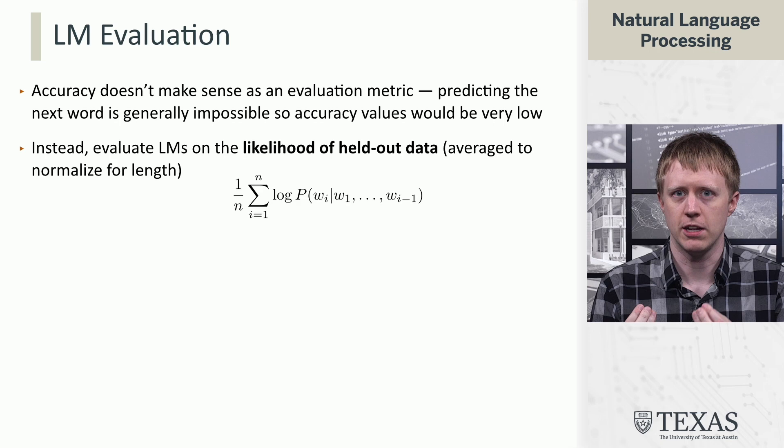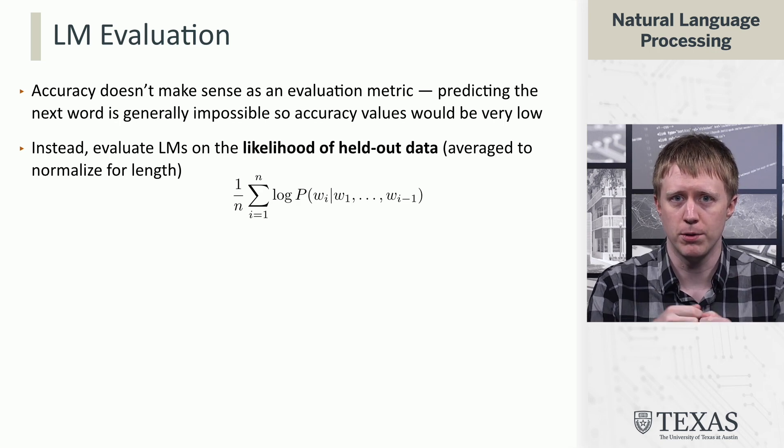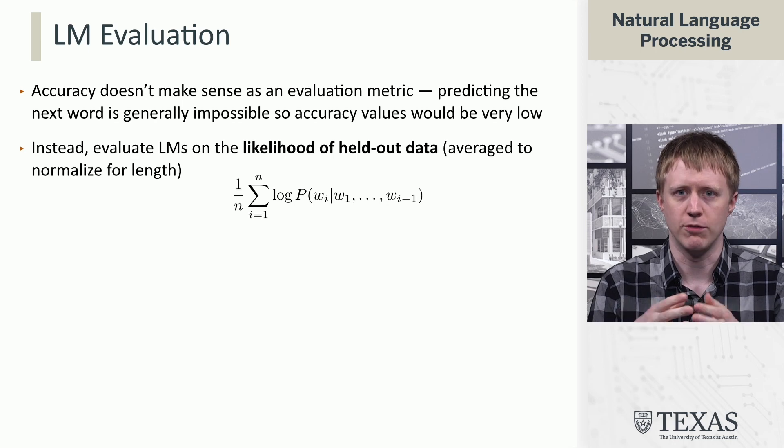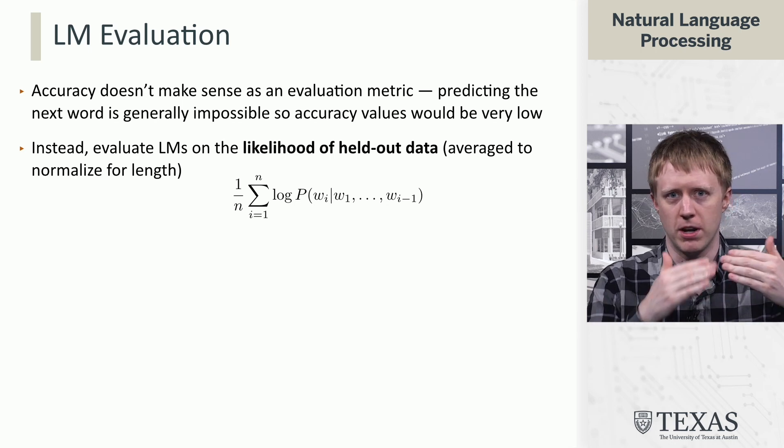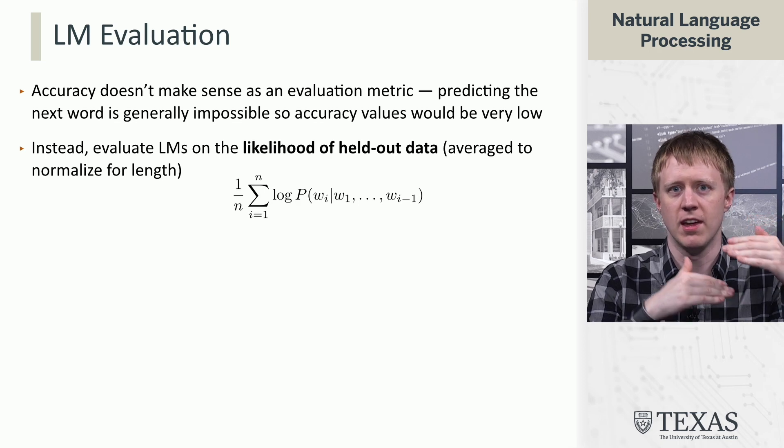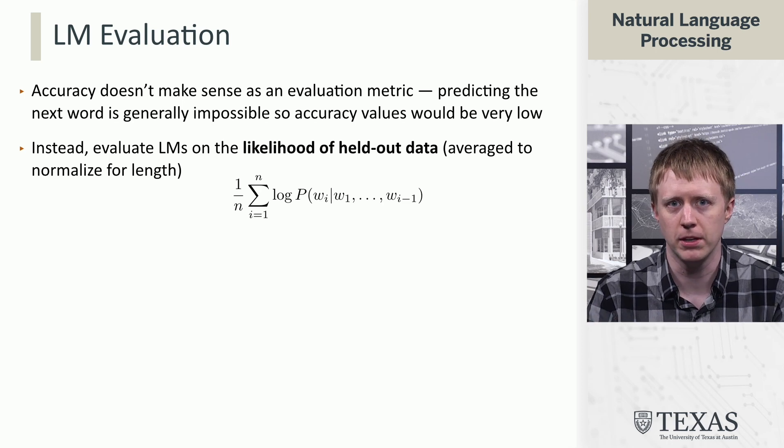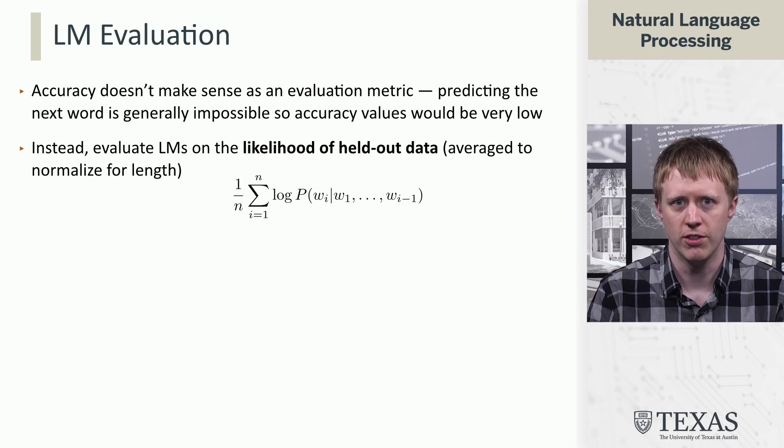we're instead going to look at log likelihood of held out data. And we also average over the number of tokens in this data to normalize for the length. So basically, if we train our language model on a big corpus of a bunch of documents, then what we can do is take a few of those documents, hold them out, and evaluate the probability that the model assigns to the tokens there.